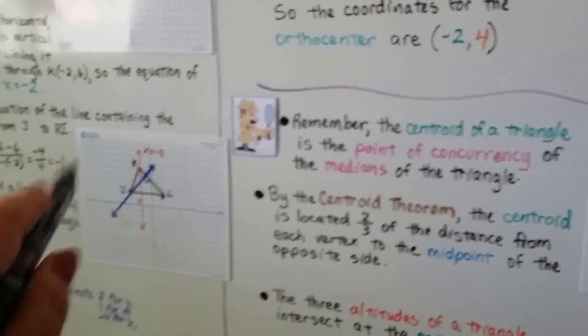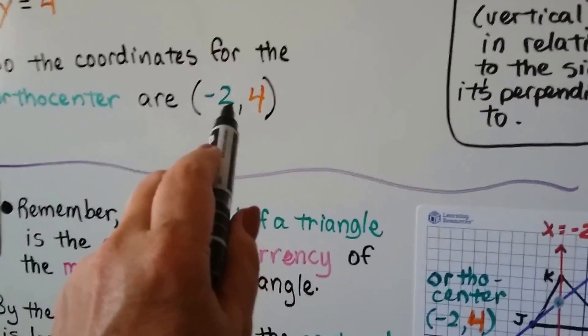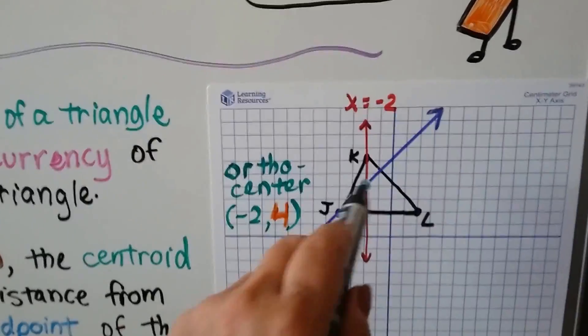So for this one we just did, and knowing that the orthocenter is at negative 2, 4, we know it's right there.